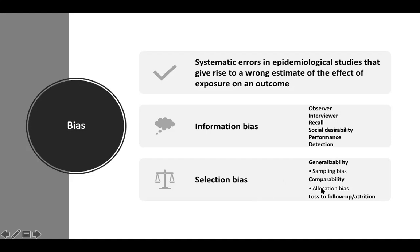Comparability involves allocation bias, where you specifically allocate people to a test group and a control group. To address generalizability, just randomizing — making the sampling process random — helps. For comparability, blinding the study, ideally double-blind, should help as well. If you blind the observer completely from the hypothesis and everything, you should be able to move forward with that.